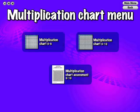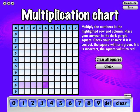Multiplication Chart randomly picks any square to answer. If the answer is correct, the square will turn green. If the answer is incorrect, the square will turn red and the question will be left in the bank to be answered again at another time.